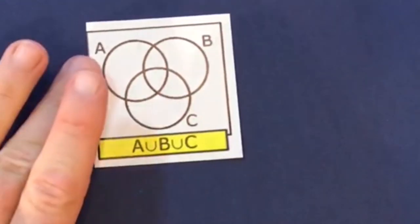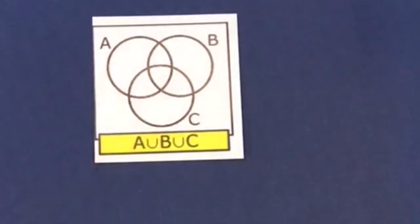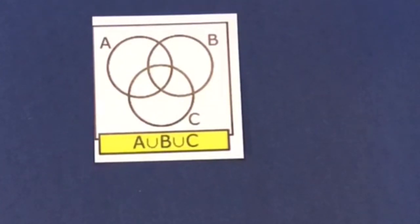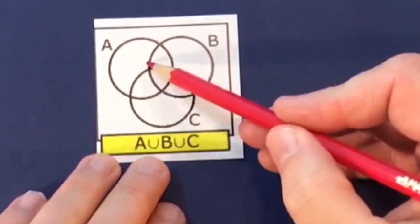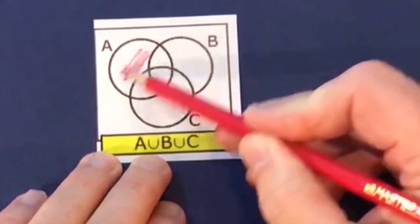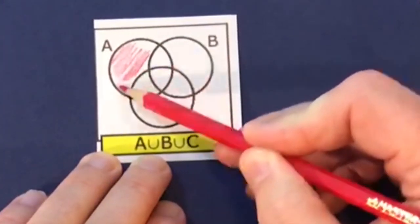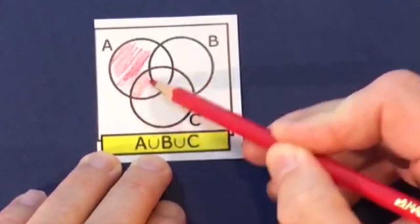This example involves all three sets: A union B union C. We colour everything that's in A or B or C, which basically means the three circles.